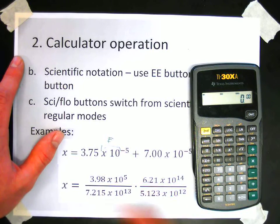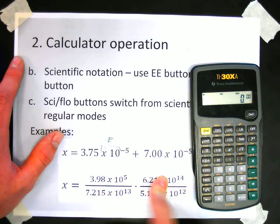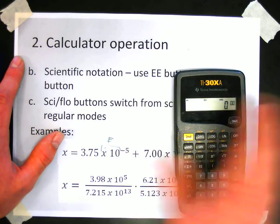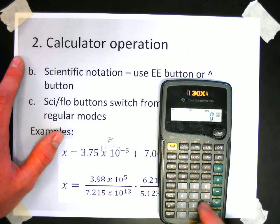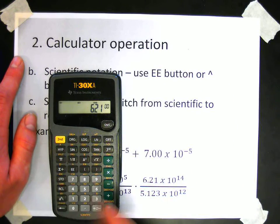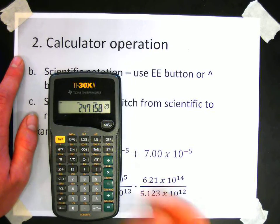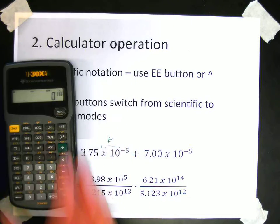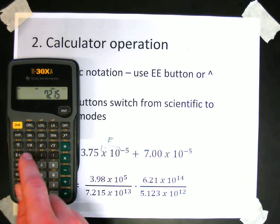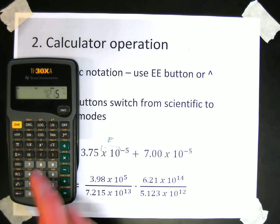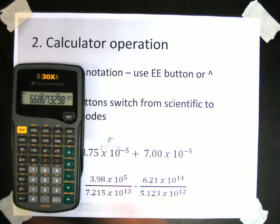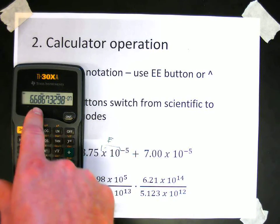But I find I end up pushing extra buttons to do it that way. And so I prefer to multiply across and get that answer, multiply across on the bottom, get that answer, and then divide. And if I use parentheses keys, it will speed that up a little bit. So I could type in 3.98 E to the 5th times 6.21 E to the 14th. And I'm going to press equals. Then I'll divide that by open parentheses, and I'm going to put both of these numbers in within the parentheses. 7.215 E to the 13th times 5.123 E to the 12th, close parentheses, equals. And that should give me the correct answer. So 6.68 times 10 to the negative 7th.